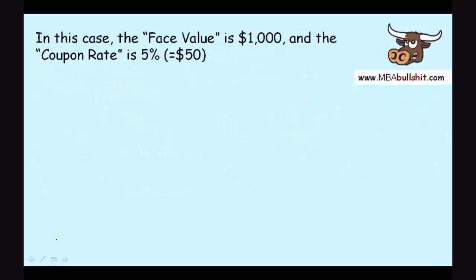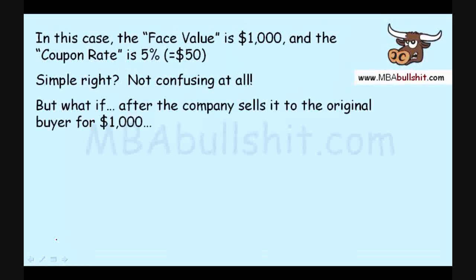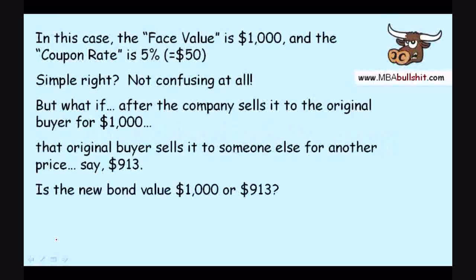So in this case, the face value of the bond is $1,000, and the coupon rate is 5%, which is equal to $50. Now, what if the company sells it to the original buyer for $1,000 — the face value — and then the original buyer sells it to somebody else for another price, like maybe $913? So you're not selling it at the face value of $1,000 anymore; you're selling it at a different price of only $913. So now, is the bond value $1,000 or is it $913?